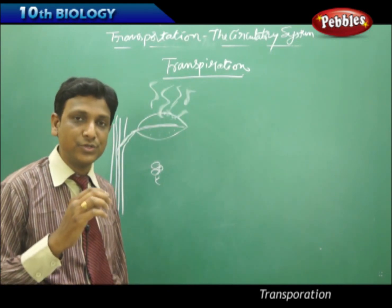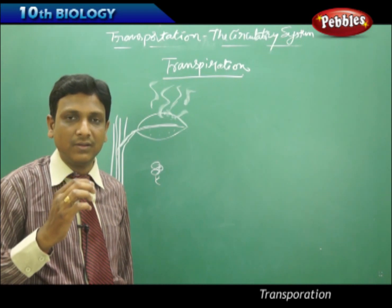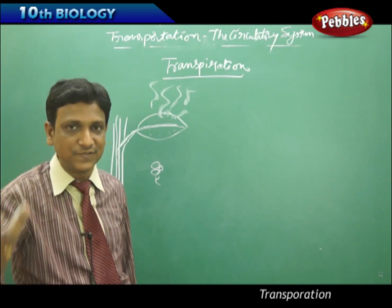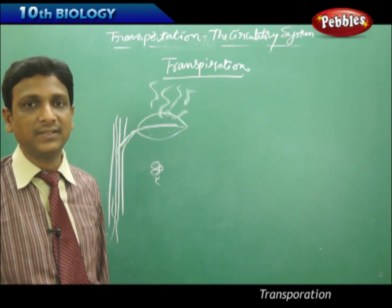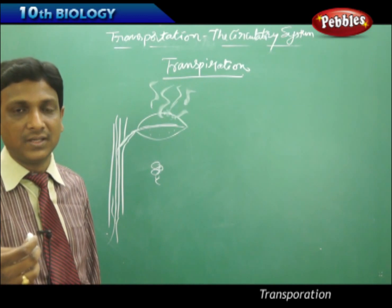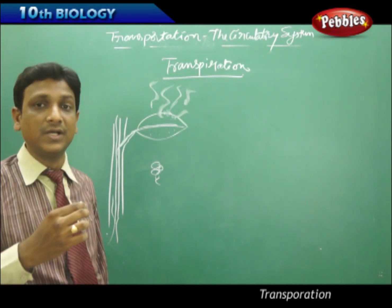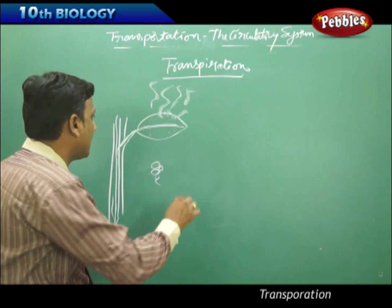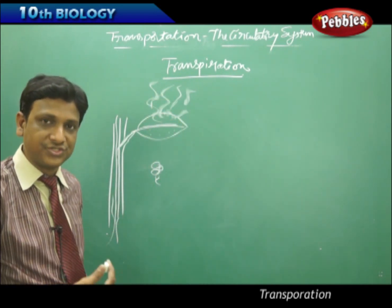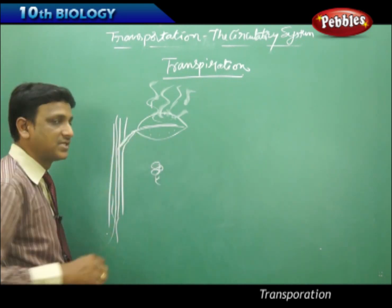Water molecules are bound with each other and carried in a continuous flow. This is just like drinking through a straw — if you suck at one end, water flows up continuously because the molecules bind together. In the same way, as water is evaporated from the surface of the leaf, water is drawn up continuously through the xylem. This is the transpiration process.